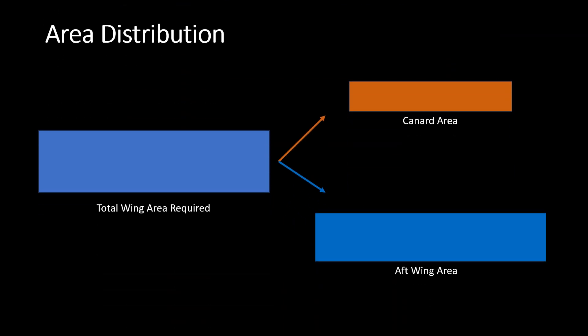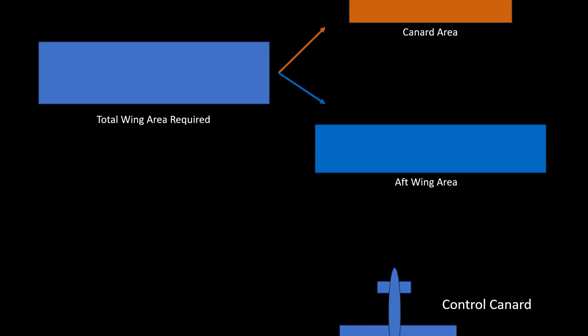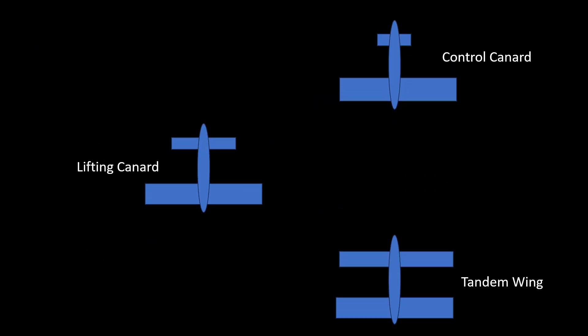Let's say you calculated your total wing area required. Now you have to divide the total area into the canard area and the main wing area. You might already have a design in mind, such as a small control canard or a large fore-plane, or even a tandem wing design.